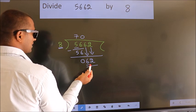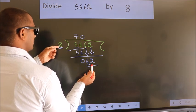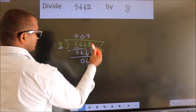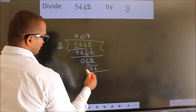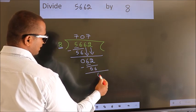A number close to 62 in the 8 table is 8 times 7, 56. Now we subtract. We get 6.